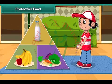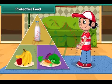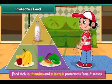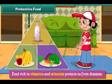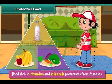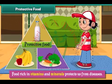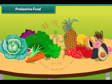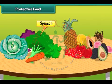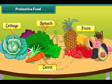Food rich in vitamins and minerals protects us from diseases. Therefore it is called protective food. Green leafy vegetables such as spinach and cabbage, carrots and fruits have lots of vitamins and minerals.